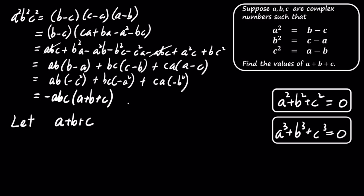We'll now let the sum of A, B, and C equal k and analyze two cases. In case 1, if the product of A, B, and C is not 0, then we find that A times B times C equals negative k.